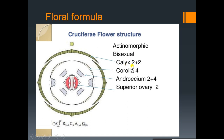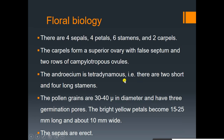The floral formula is: actinomorphic, bisexual, calyx 2+2, corolla 4, androecium 2+4, superior ovary 2. This is the crucifera flower structure. Cauliflower belongs to the crucifera family. The flower structure will be explained one by one.